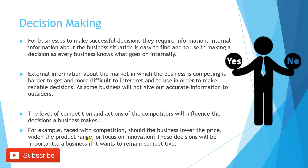For a business to make successful decisions, they require information. Internal information about the business situation is easy to find. However, external information about the market in which the business is competing is harder to get and more difficult to interpret to make a reliable decision, as some businesses will not give out accurate information to outsiders. The level of competition and actions of competitors will influence the decisions a business makes — for example, faced with competition, should the business lower price, widen the product range, or focus on innovation? These decisions are important if the business wants to remain competitive in the market.